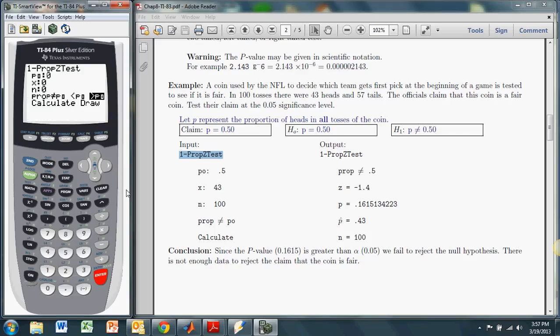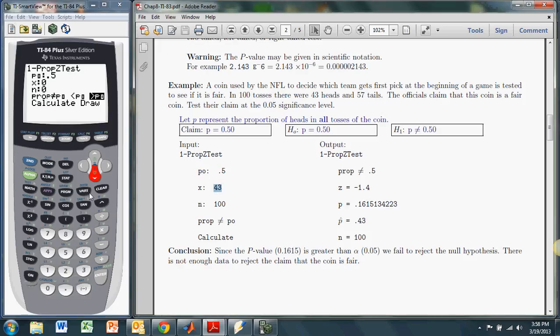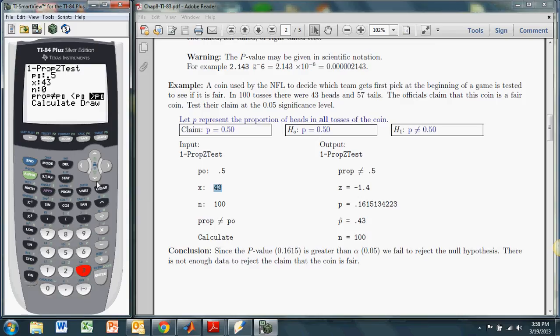It's requesting some information. The proportion from the null hypothesis, that's what this is asking for, is 0.5. So we'll put in 0.5. Then the number of successes. It doesn't actually ask for the sample proportion, but it asks for the number of successes and the number of trials. The number of successes in this case is 43, and that's out of 100 trials. So we go down to N, which is 100.